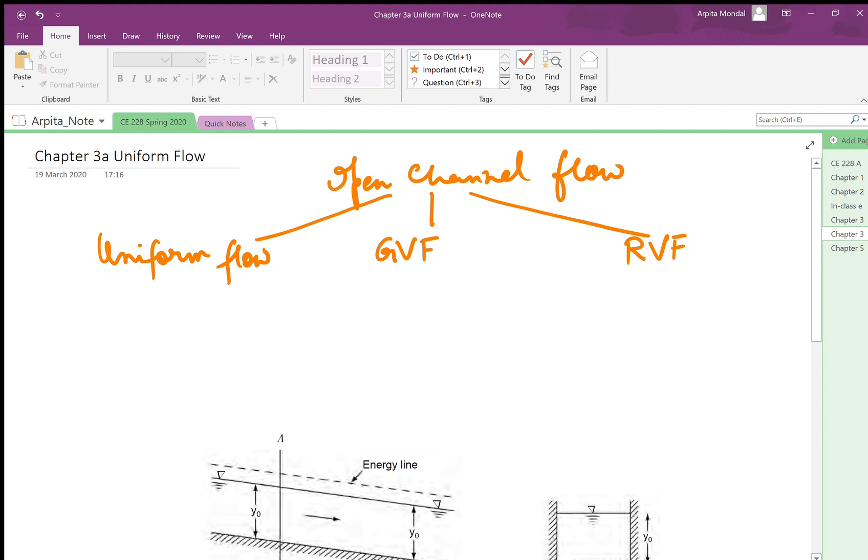So uniform flow is when you have two sections, section one and section two, along the length of the channel. We have the velocities at these two sections equal and we also have the depth of flow in these two sections equal.